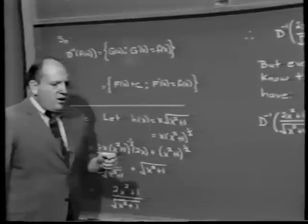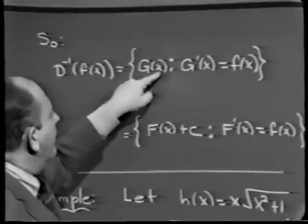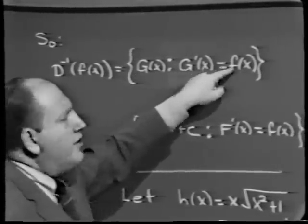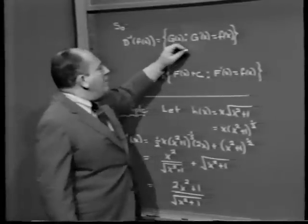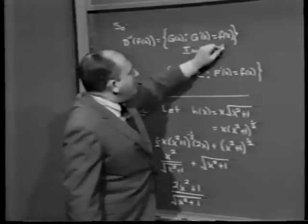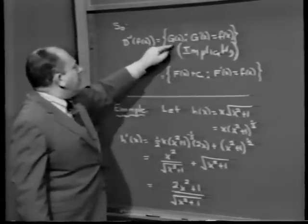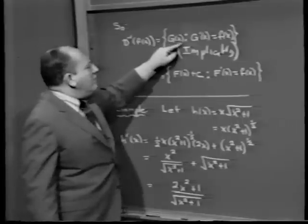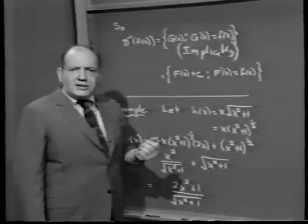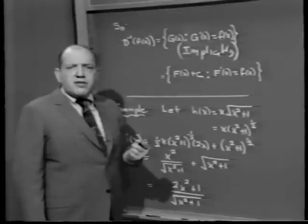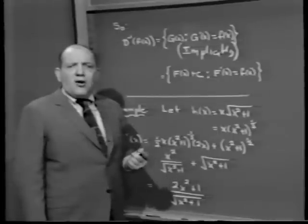D inverse of f of x means the set of all functions g of x whose derivative with respect to x is the given f of x. To find the set explicitly: find one function, capital F, whose derivative is little f. Then the set is all functions of the form capital F of x plus c, where c is an arbitrary constant. To test whether g of x belongs to this set, simply differentiate g and see if you get f.